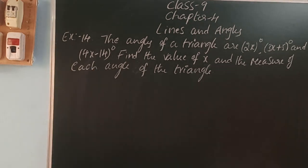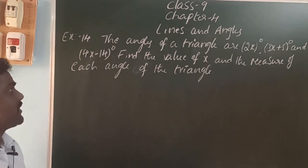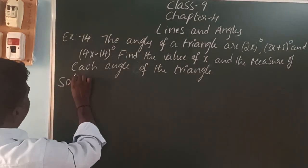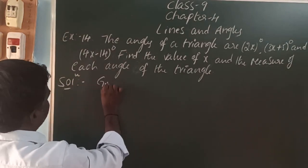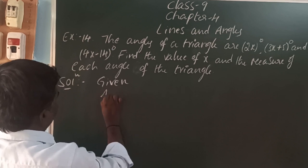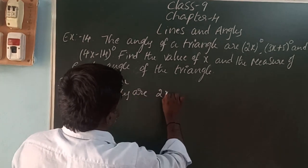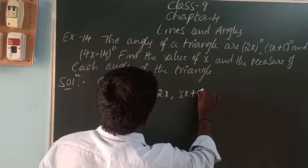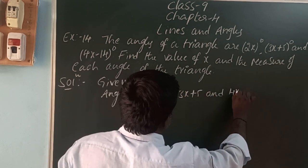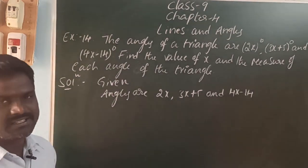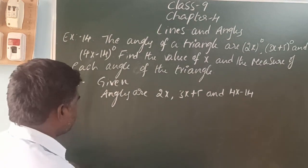The angles of a triangle are 2x, 3x plus 5, and 4x minus 14. Find the values of x and the measure of each angle of the triangle. Here, the given angles are 2x, 3x plus 5, and 4x minus 14. We know that one property: sum of angles in a triangle is 180 degrees.